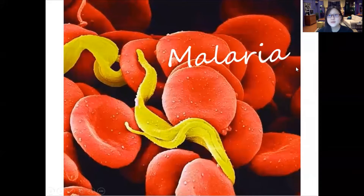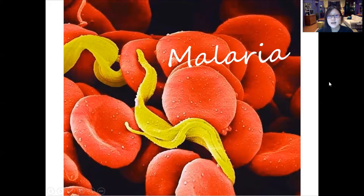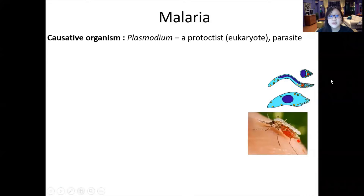Hi and welcome to the second disease out of six diseases. This is malaria. Malaria is caused by Plasmodium, which is a protist — a unicellular eukaryote, which means it has a true nucleus.